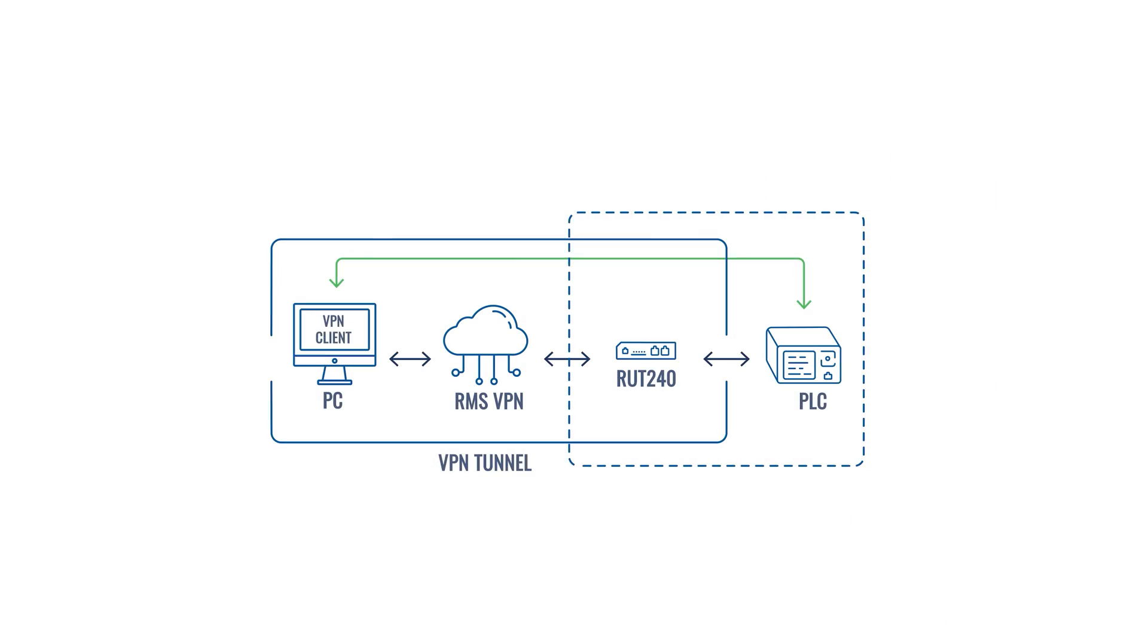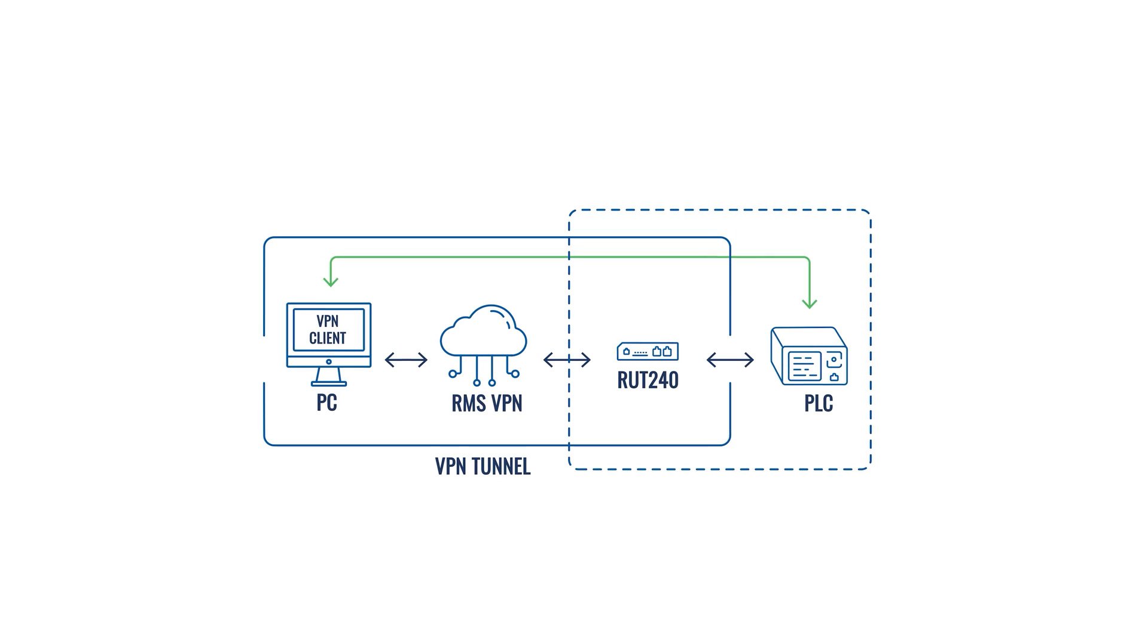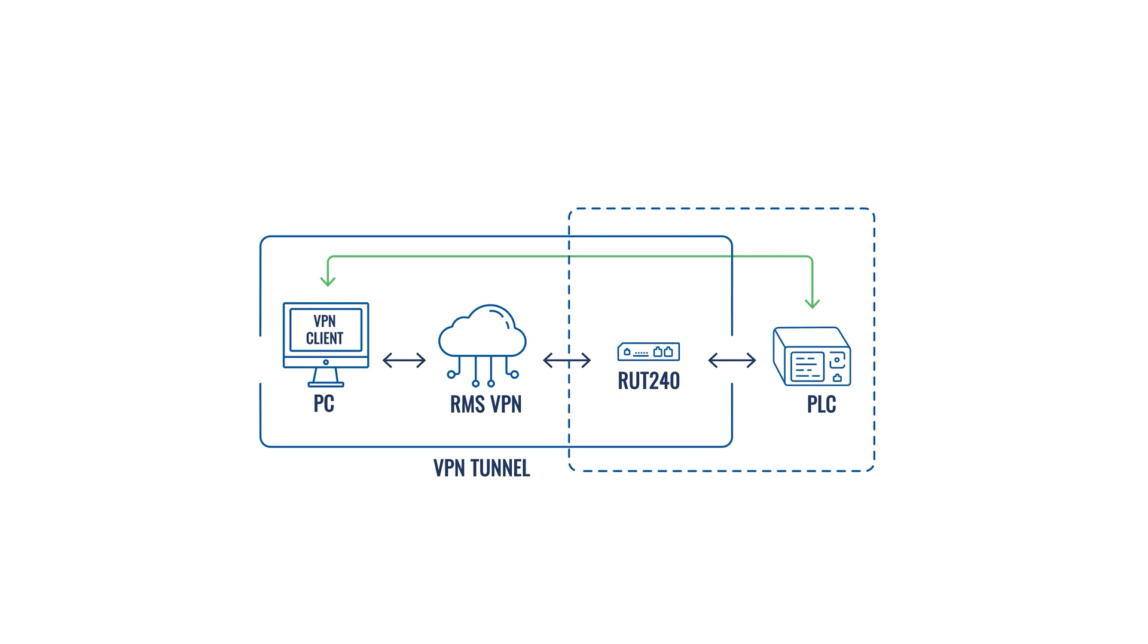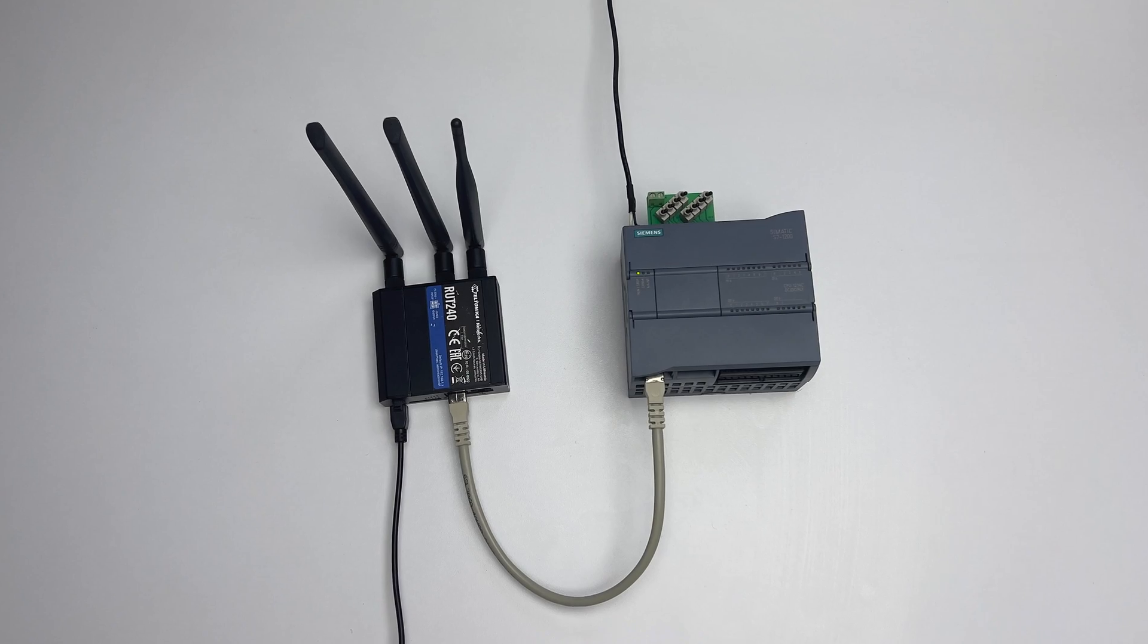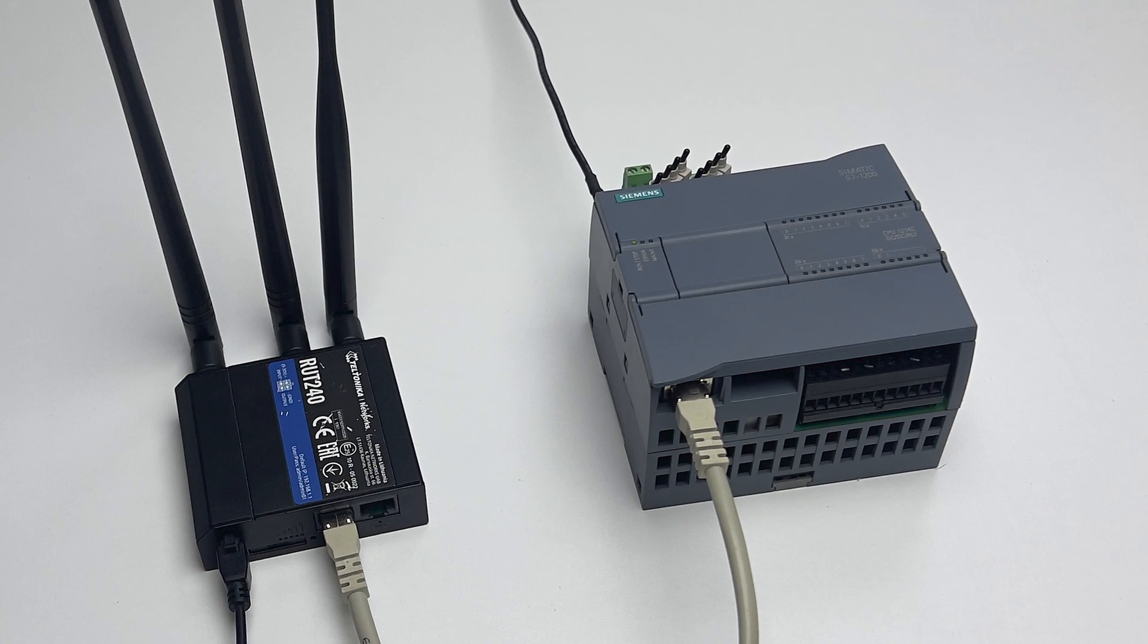Before we begin, let's look at the simple topology. We'll use the RUT240 industrial cellular router for this demonstration, which is a perfect choice when you need to set up connectivity for remote solution. Since our remote router doesn't have a public IP, we'll use our cloud management platform RMS to establish a secure VPN connection to reach the Siemens PLC remotely. Thanks to our partner, Anet Automation from Turkey for helping us prepare this demonstration.